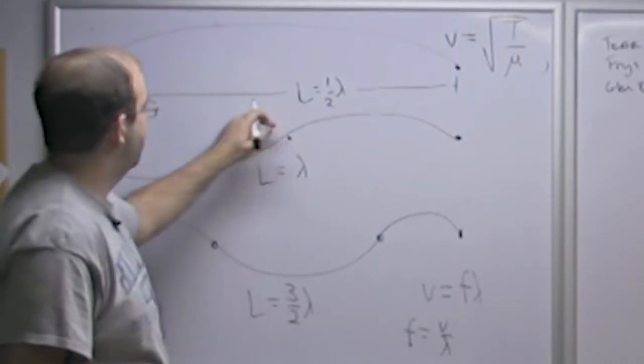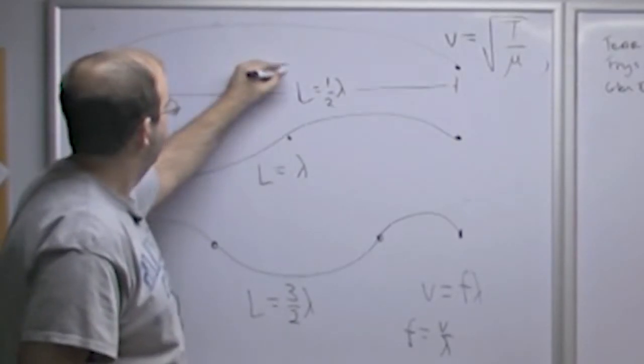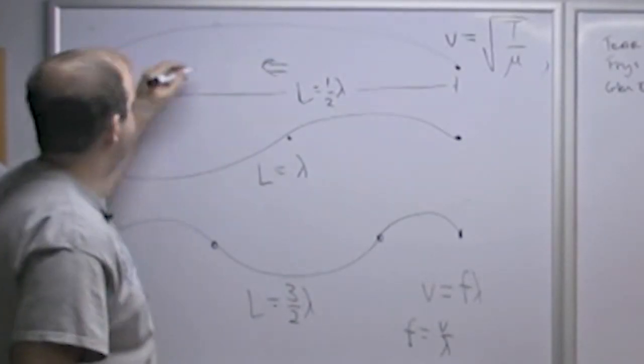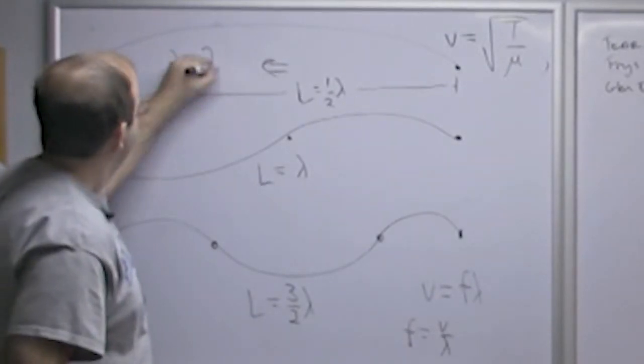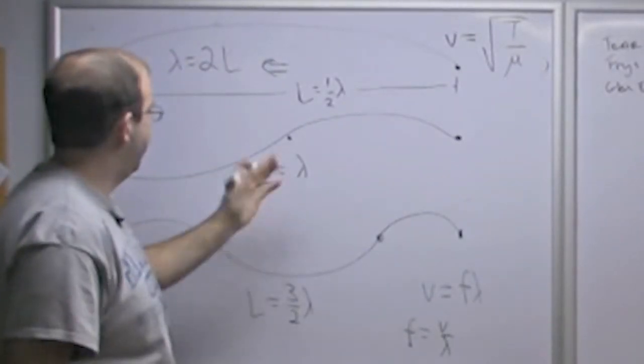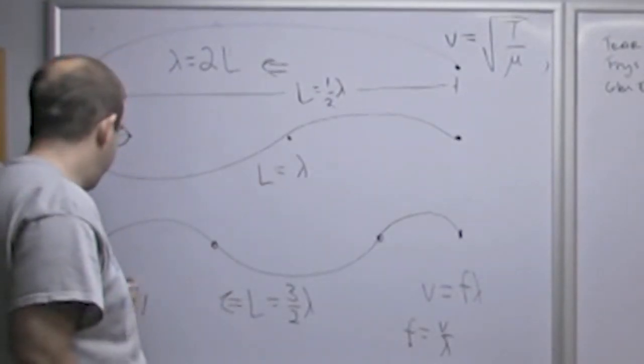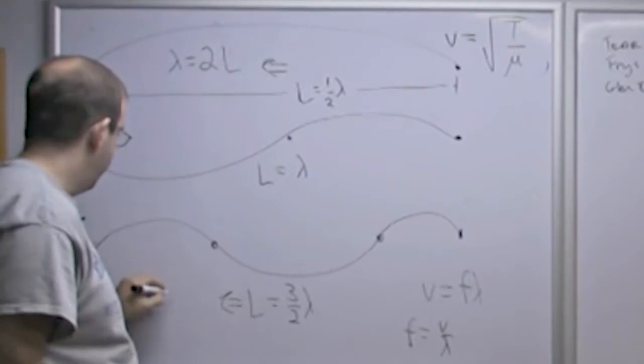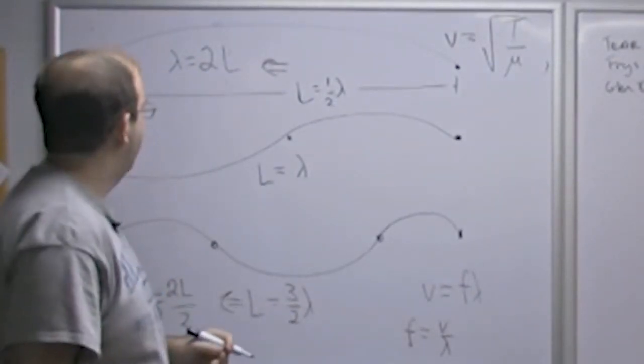So then all we would need is an expression for lambda for each of these. So what I do here is then I just solve these equations. So then this expression here, I'm going to rewrite as lambda is equal to 2L. Lambda equals 2L. Here we're already done. Lambda equals L. And here, the expression becomes lambda is equal to 2L over 3.